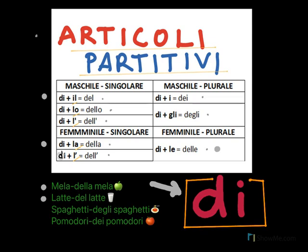'Spaghetti' starts with double consonant SP, so the article is 'gli.' You say 'gli spaghetti' — you are right here because you never eat just one 'spaghetto,' you eat 'spaghetti' in plural. So combining 'di' plus 'gli' you will have 'degli spaghetti.' Next is 'pomodori,' the plural of 'pomodoro' — masculine plural. It will be 'di' plus 'i,' becoming 'dei pomodori,' meaning some tomatoes.